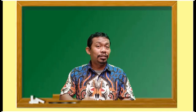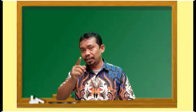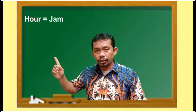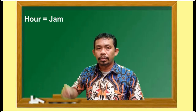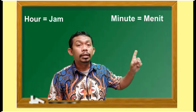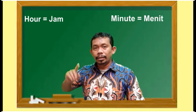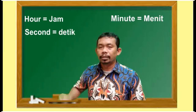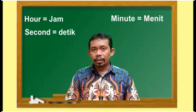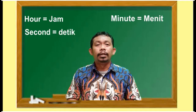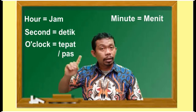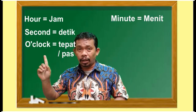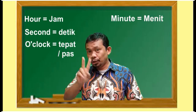Let's see the other terms that we use in telling time: hour (jam), minute (menit), second (detik). For exact times we use o'clock — for example, 7 o'clock, 10 o'clock, 2 o'clock, 1 o'clock.